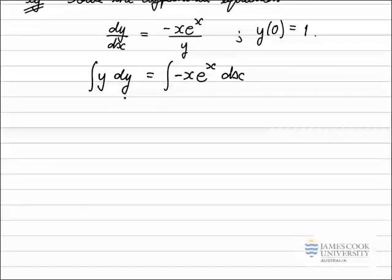So integrating the left-hand side, the integral of y with respect to y, which is 1 half y squared. The integral on the right-hand side here will require a bit more work. I see I have the product here. One of the functions will reduce when I differentiate. The exponential stays as an exponential whether I differentiate or integrate. So this is going to be done with integration by parts.